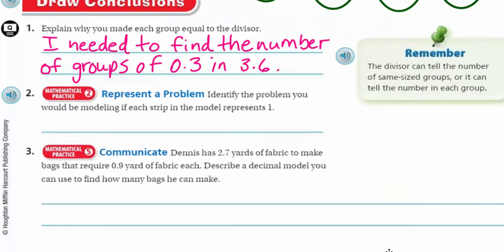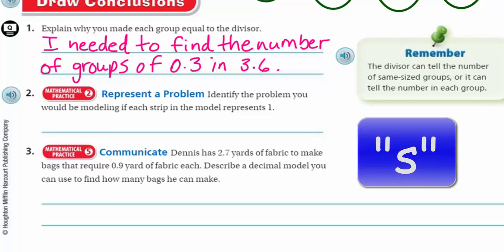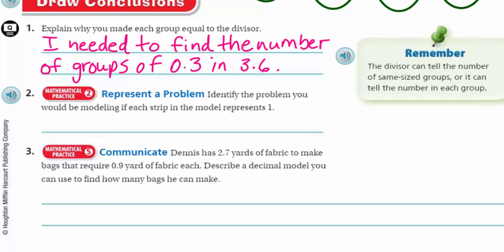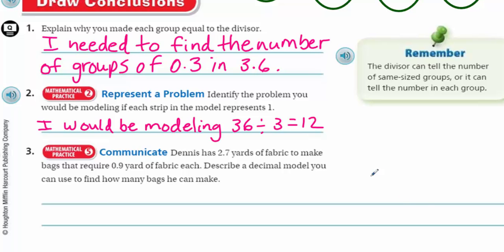So identify the problem you would be modeling if each strip in the model represents one. This is a perfect example of how we're going to decontextualize. That would be modeling the problem 36 divided by three equals 12. This is if we're saying each strip was worth one whole — a whole number, no decimals. It's just going to be 36 divided by three equals 12.